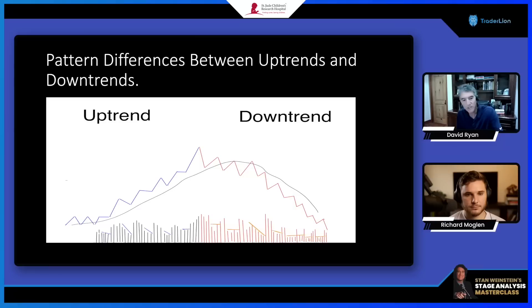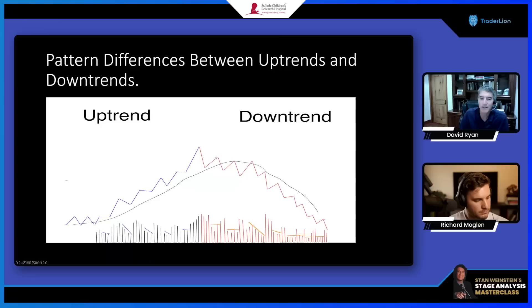When a stock moves higher, it moves higher on higher volume. When it pulls back, it does so on lower volume. When it moves up again, the volume increases; when it goes sideways to down, it decreases. This continues on and on until the whole thing reverses — then the stock starts down on big volume and goes up on light volume.